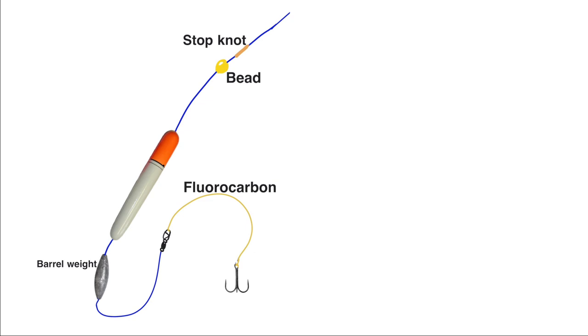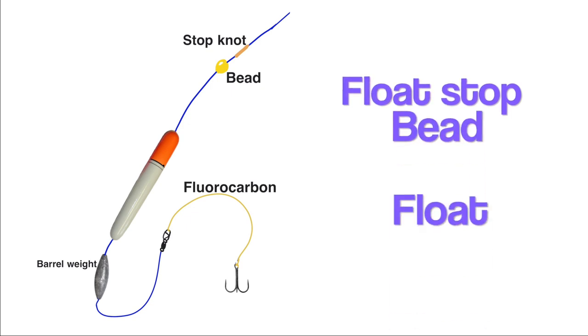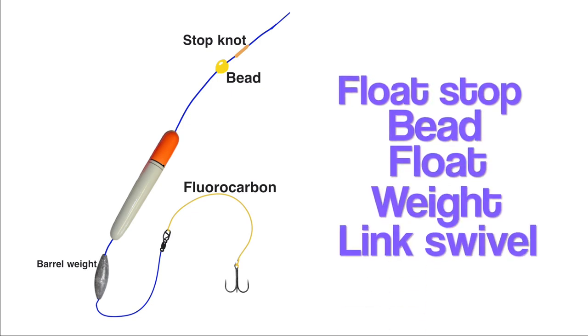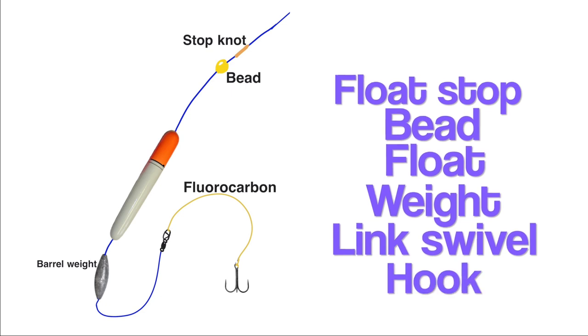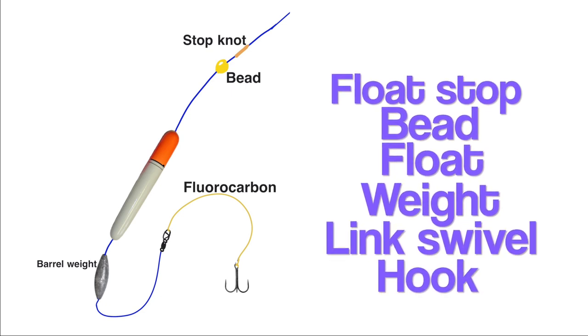So here's one way of making the float rig for sea fishing. I tend to use this for bigger baits, perhaps live baits, even as big as mackerel. You're going to need a stop knot, bead, float, weight, link swivel, and some sort of hook as well, depending on what you're using as bait.